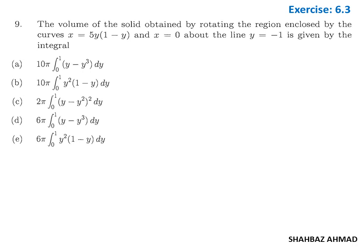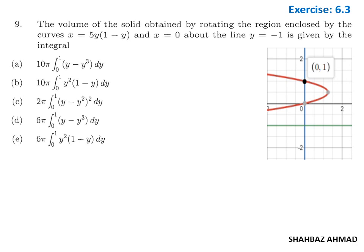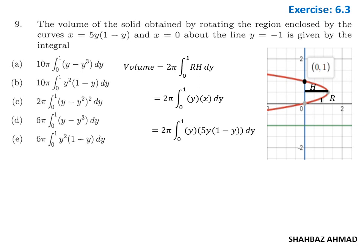Question 9 is again the cylindrical shell method from section 6.3. The diagram shows the region with x = 0 (blue), the curve (red), and the axis of rotation at x = −1 (green). Since the axis of rotation is horizontal, integration is along the y-direction. Radius and height are identified from the diagram; substituting x from the curve equation and simplifying gives option B as the correct answer.